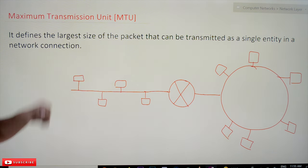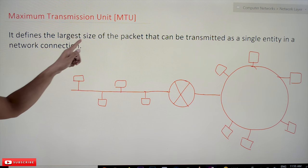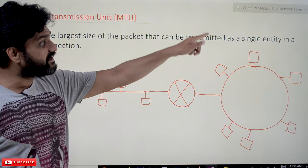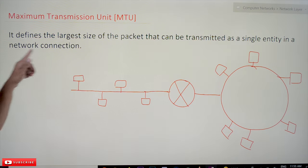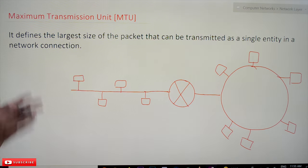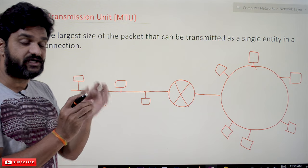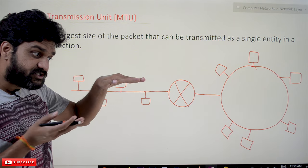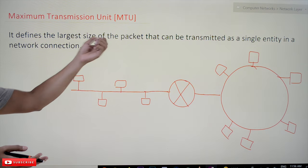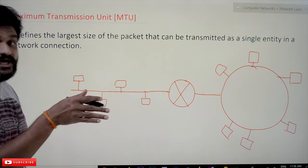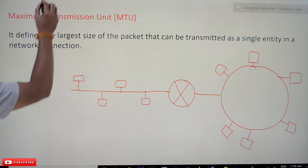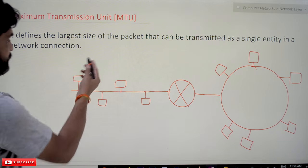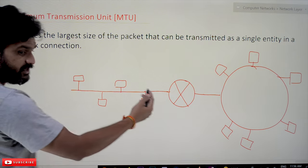Maximum Transmission Unit defines the largest size of packet that can be transmitted as a single entity in a network connection. In a single network connection, the largest size of the packet that can be transmitted is what we call the Maximum Transmission Unit. This definition may be hard to grasp, so we'll try to understand it using a simple network diagram.